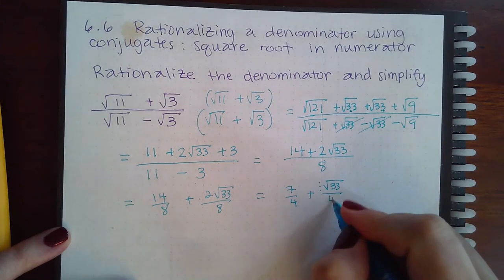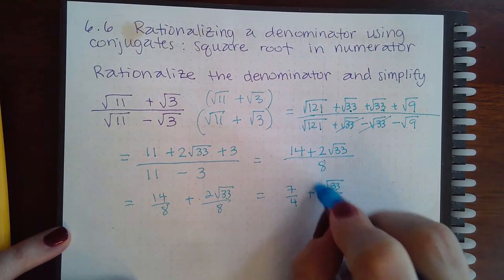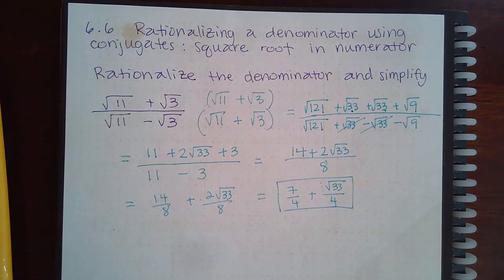But we know in formal math, we do not write the invisible one in there. So it just looks like this expression: 7/4 + √33/4.